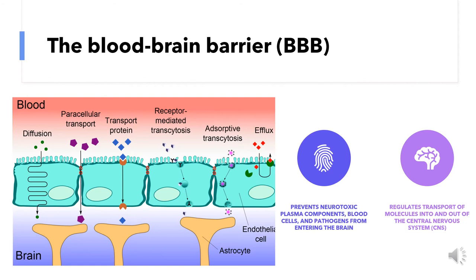The blood-brain barrier is a highly selective layer of individual cells which separates the central nervous system from the rest of the body. The blood-brain barrier works as a barrier from pathogens and cells from the blood, as the brain doesn't have immune defenses as strong as the rest of the organism.